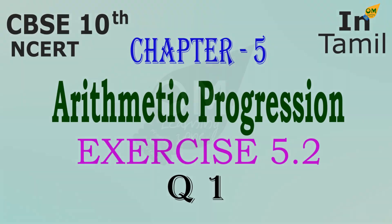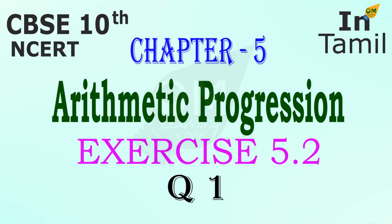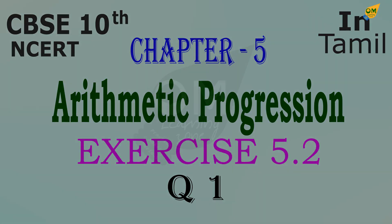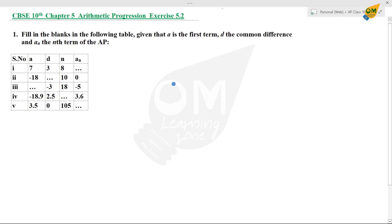Hi students! You are now looking at 10th standard CERT CBC syllabus, Chapter 5: Arithmetic Progression. That is Exercise number 5.2, first sum. Fill in the blanks in the following table given that a is the first term, d is the common difference, and aₙ is the nth term of the AP. AP is Arithmetic Progression.